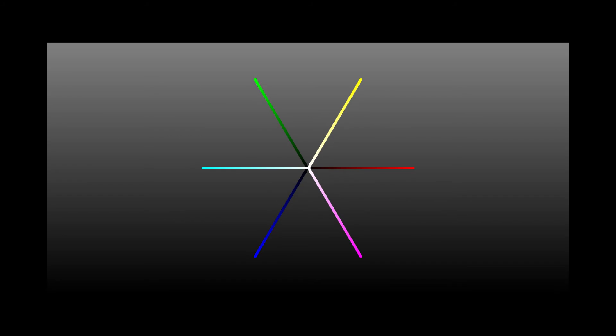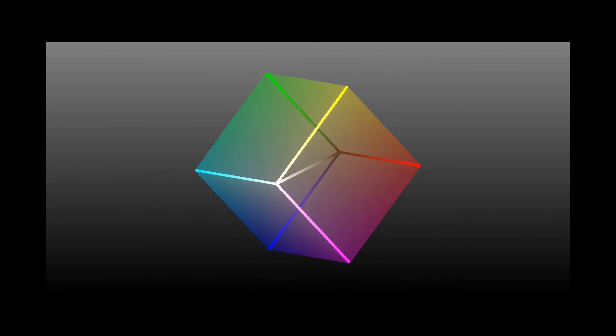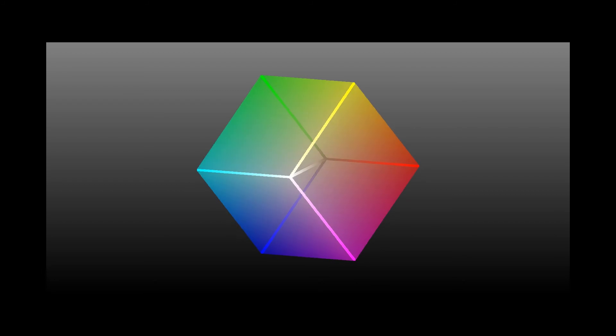Did you notice that the opposite of the RGB axes are the CMY — cyan, magenta, and yellow — axes? CMYK is a complementary color space to RGB. The K in CMYK is a measure of black pigment used to absorb RGB light evenly. There is one more color space the cube can give us insight about: we can approximate the HSL, or hue, saturation, and lightness, color space.